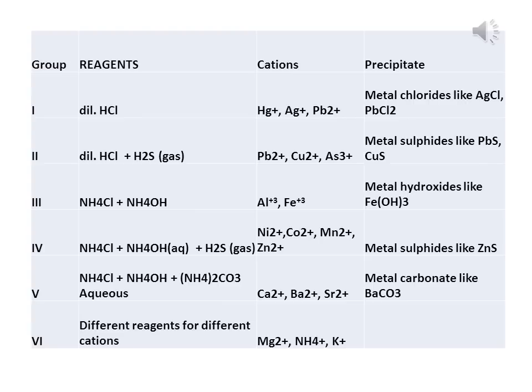For Group 5, use an aqueous solution of ammonium chloride, ammonium hydroxide, and ammonium carbonate added to the salt solution. If Ca²⁺ is present, you will get a white precipitate of calcium carbonate. If Ba²⁺ is present, you get white precipitate of barium carbonate. If Sr²⁺ is present, you get a precipitate of strontium carbonate. If no white precipitate forms, proceed to Group 6.